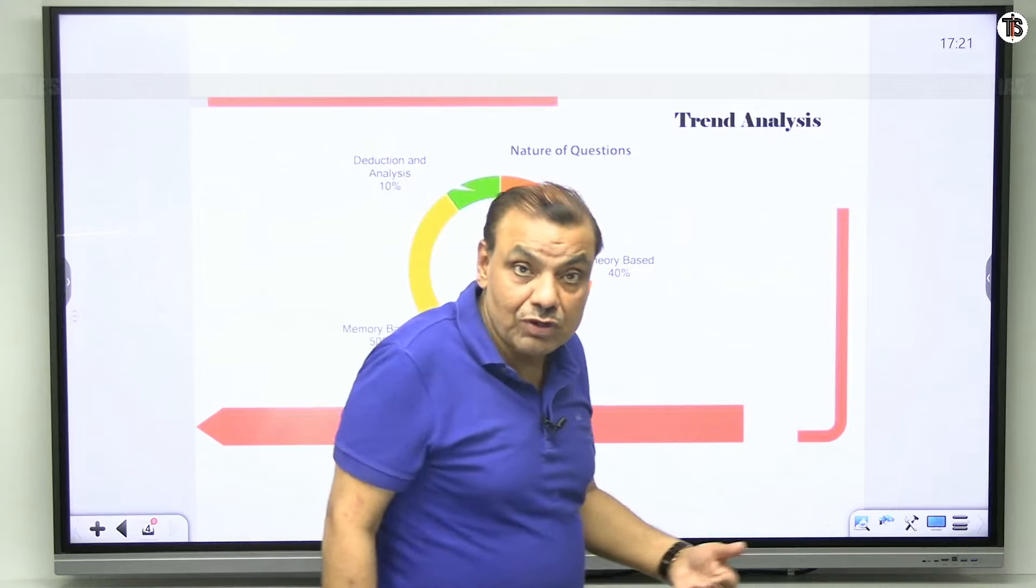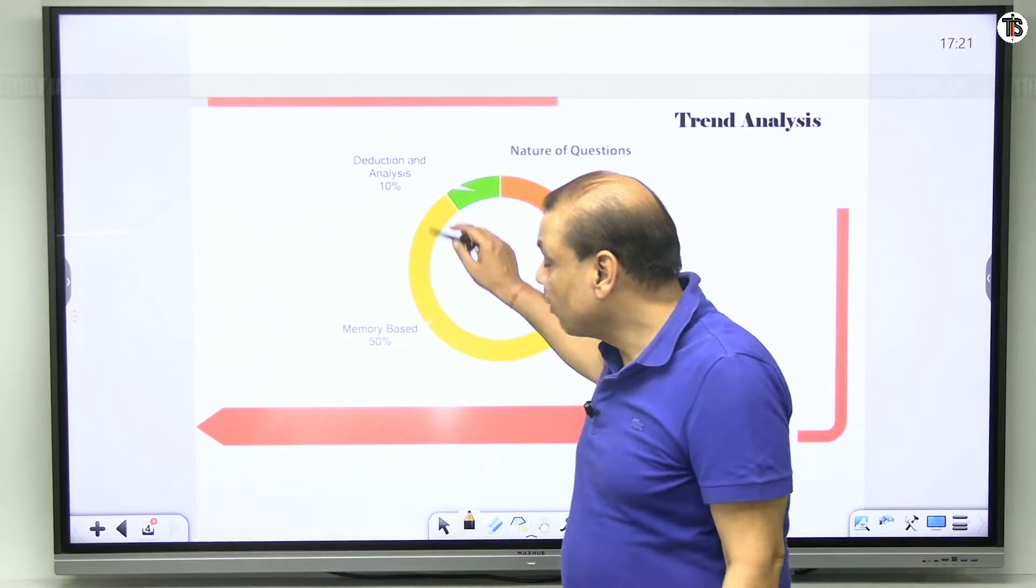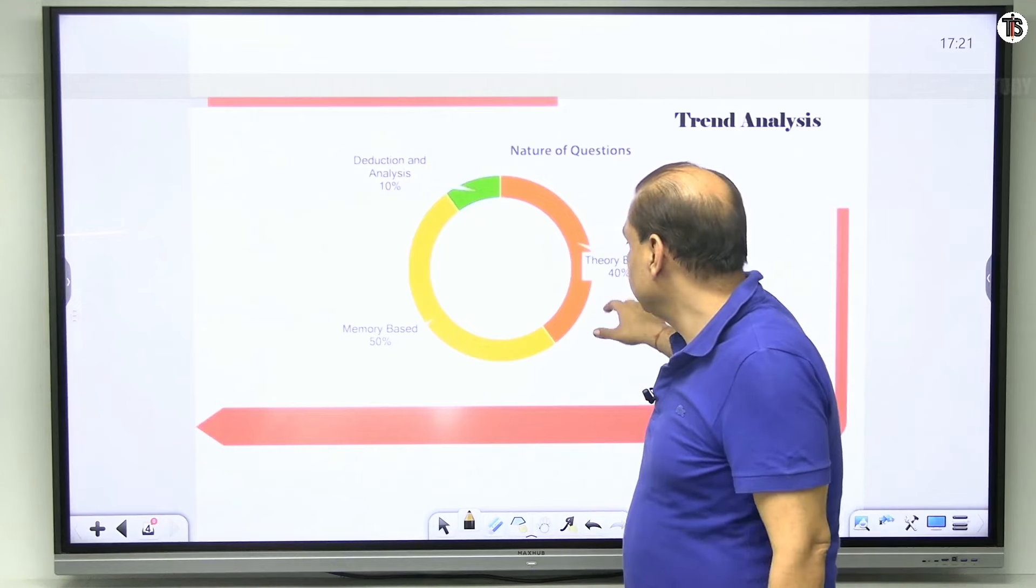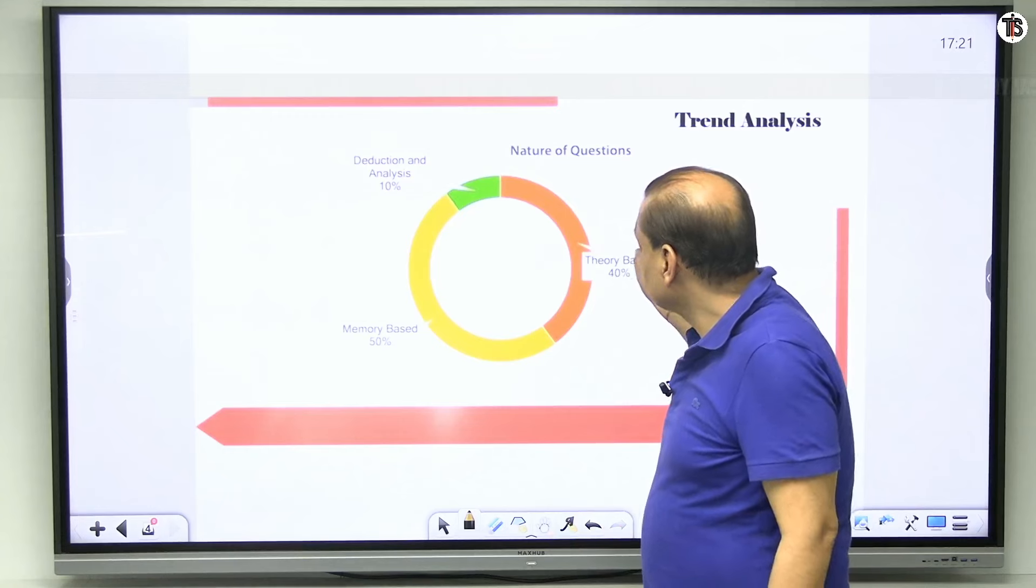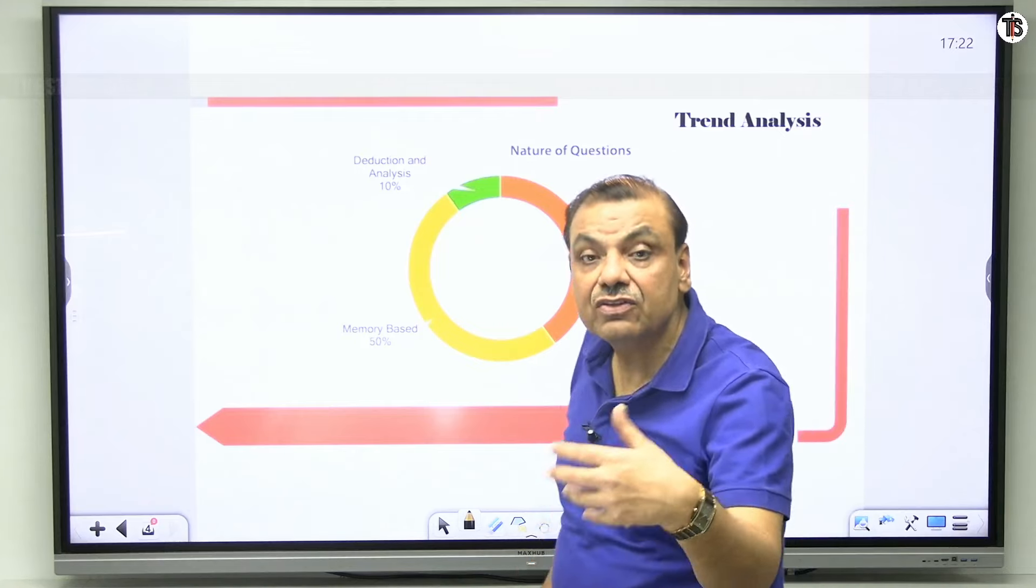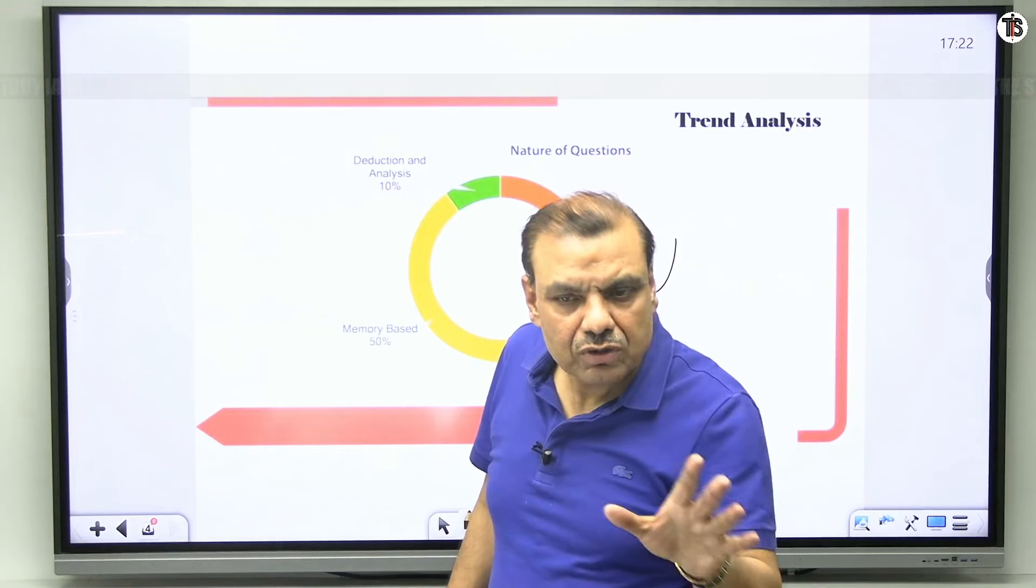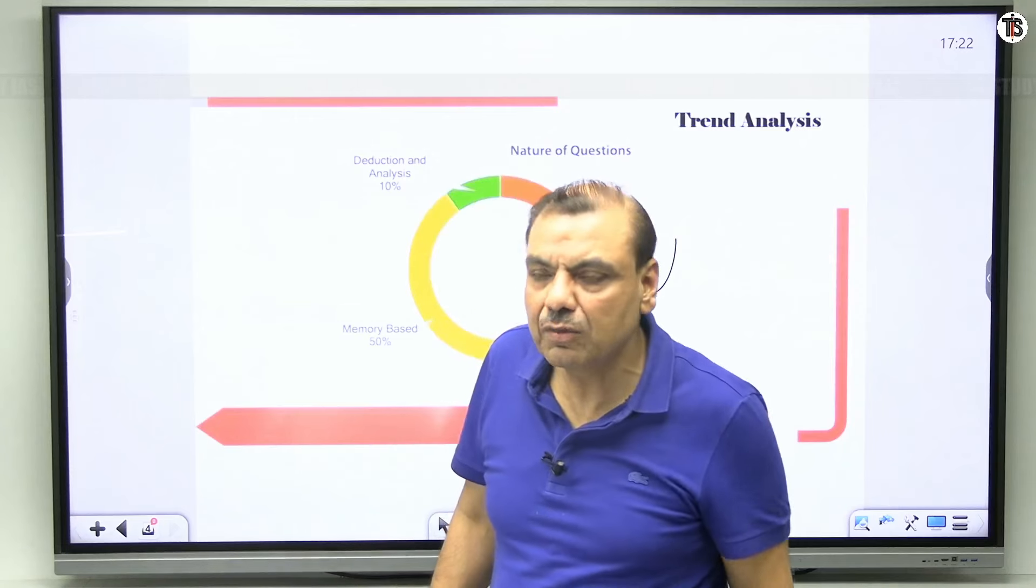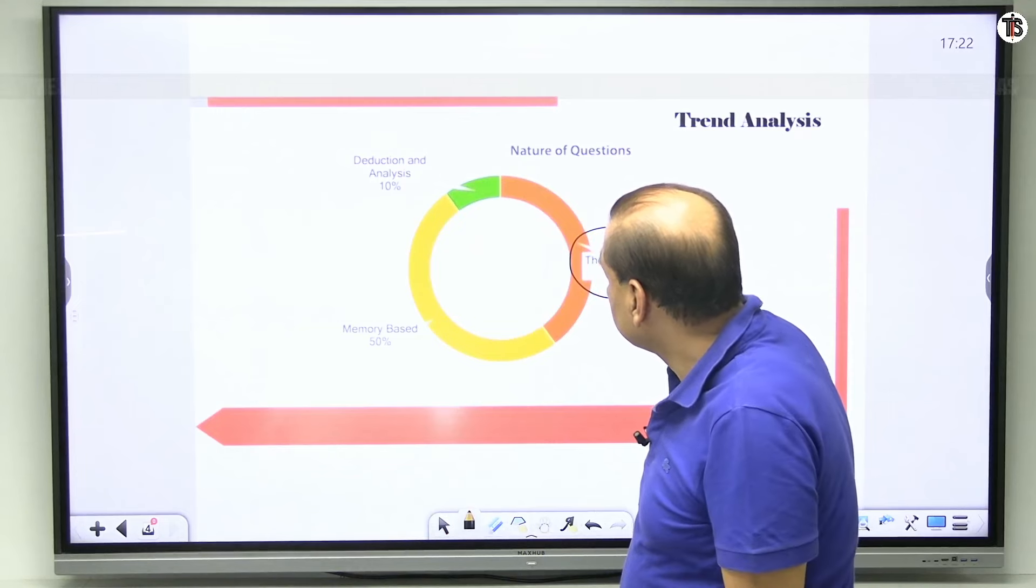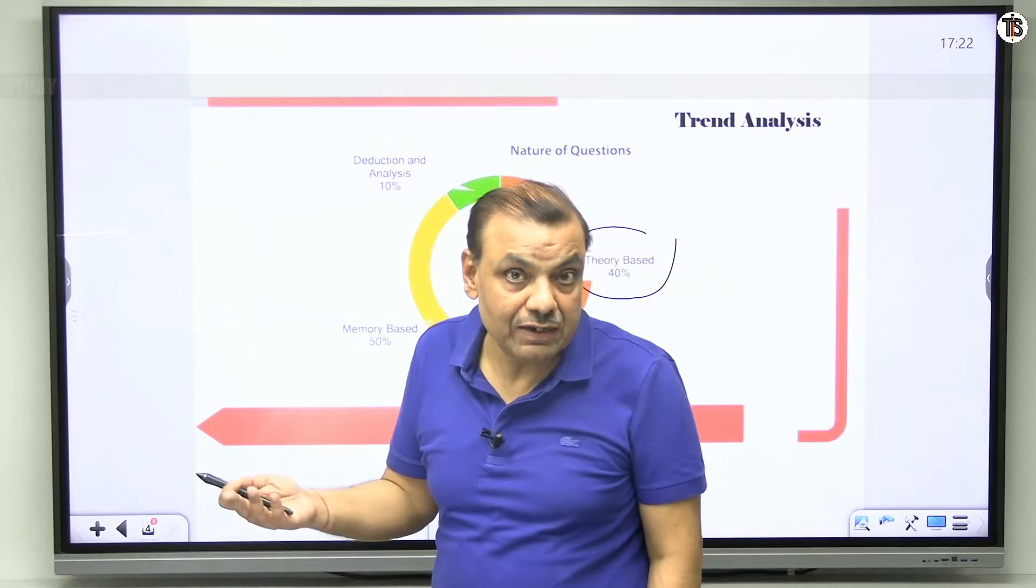Now we are talking about the third or the third type of trend, what is the third trend visible? The visible trend is in the nature of questions. So 40 percent questions are the theory based questions, means they are just taking from the text and theory, whether it may be polity, society, economy, etcetera. Theory based questions that is the 40 percent questions and deduction and analytical questions, it is the matter of happiness or the matter of sadness, you people will decide.